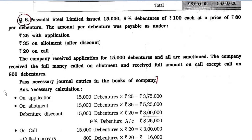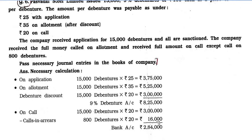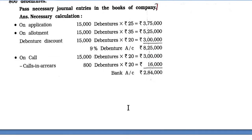Necessary Calculation: On application — 15,000 × Rs. 25 = Rs. 3,75,000. On allotment — 15,000 × Rs. 35 = Rs. 5,25,000. Debenture discount — 15,000 × Rs. 20 = Rs. 3,00,000. Total debenture account = Rs. 8,25,000 (i.e., Rs. 5,25,000 + Rs. 3,00,000). On call — 15,000 × Rs. 20 = Rs. 3,00,000, minus call-in-arrears: 800 × Rs. 20 = Rs. 16,000. Bank account on call = Rs. 2,84,000.